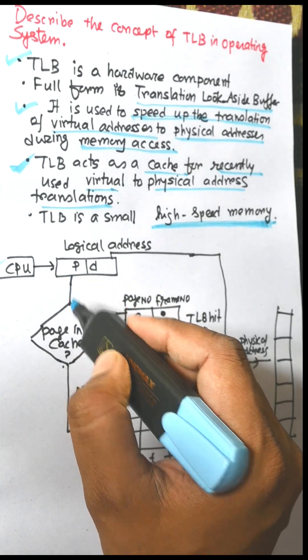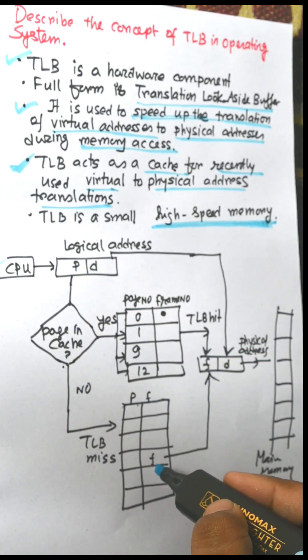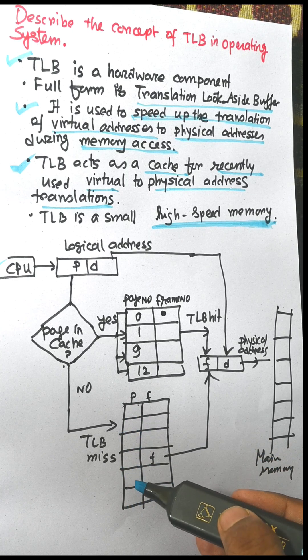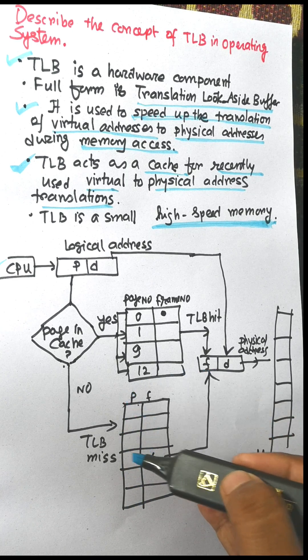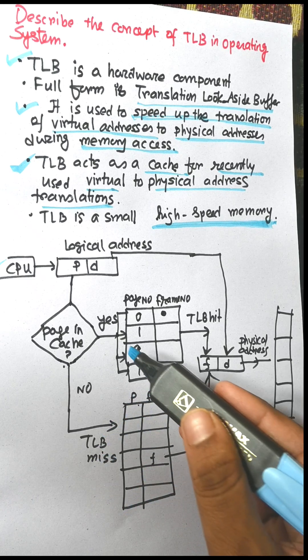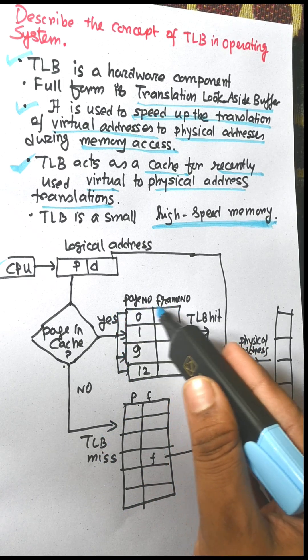Page number is used to search page table. Normally page number is used to search page table and it will search one by one. So it will take more time to access the frame number from the page table. To improve this slower access, the TLB is introduced.